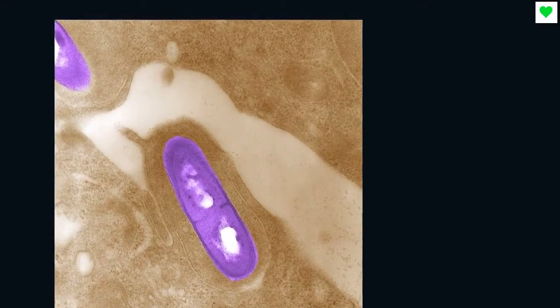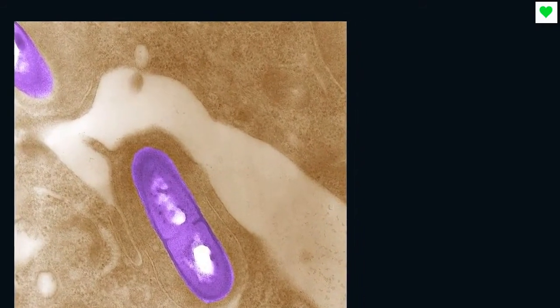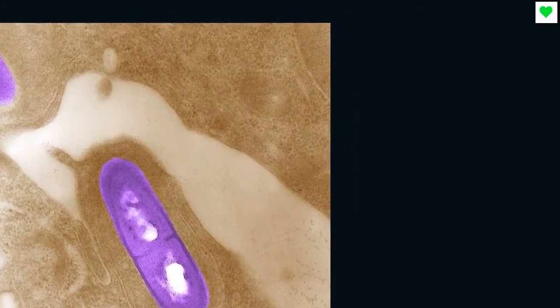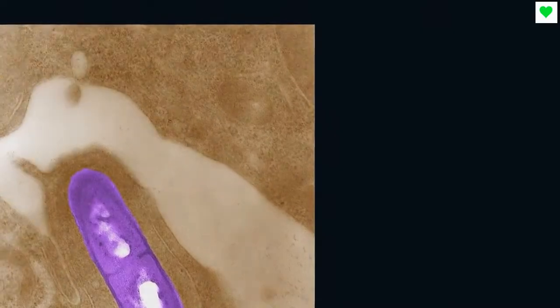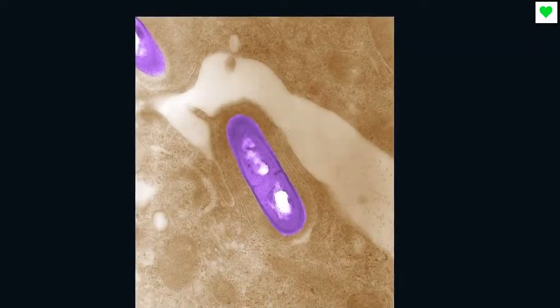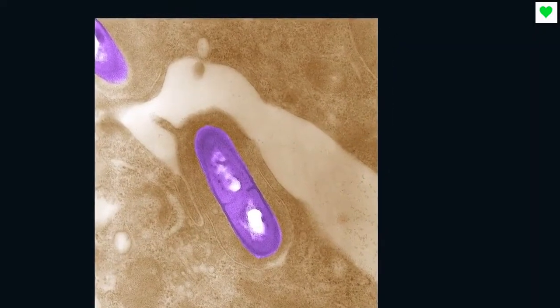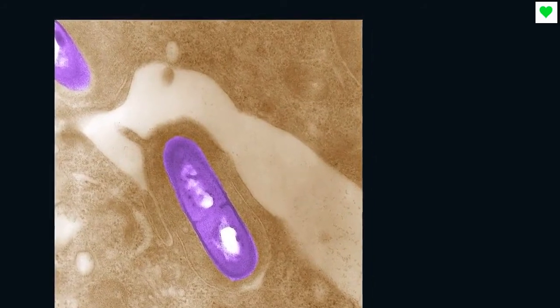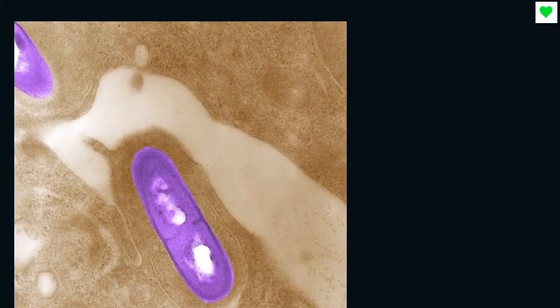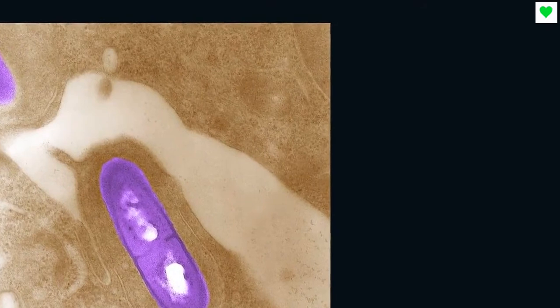This is because listeria on the exterior casing, packaging, of Polony can be transferred to other products it comes into contact with, including Viennas, Russians, Frankfurters, other sausages, and other cold meat products that are typically not cooked before eating, he said.